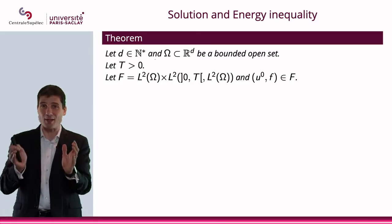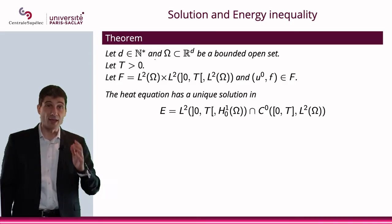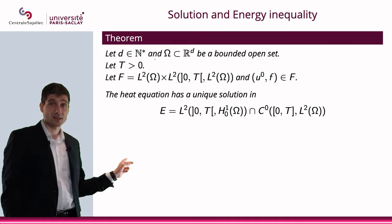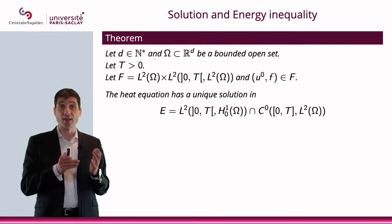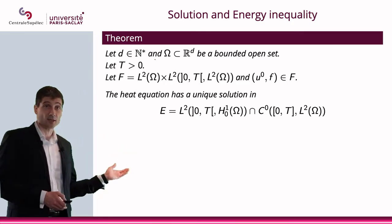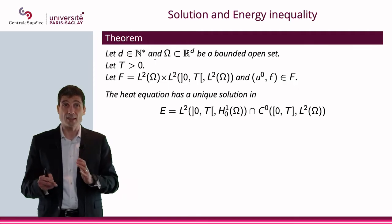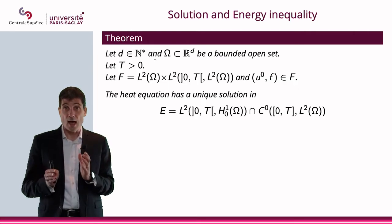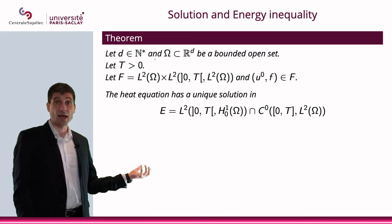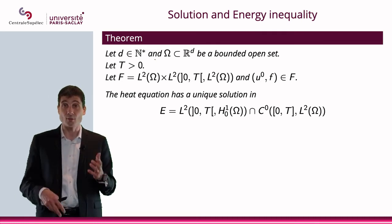We're going to state a result and affirm something here. The heat equation has a unique solution in the space E, which is L²(0,T; H¹₀(ω)) intersected with C⁰(0,T; L²). In other words, the solution to the heat equation is going to be L² in time and H¹ in space, and also continuous in time with L² in space. There is a unique solution — it has a solution and this solution is unique.